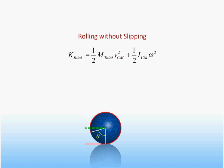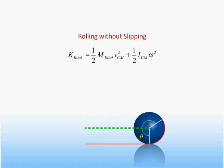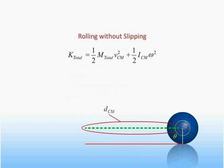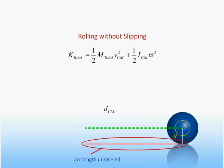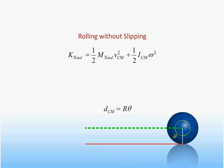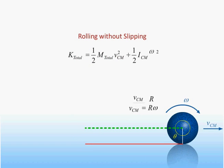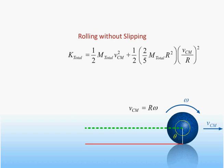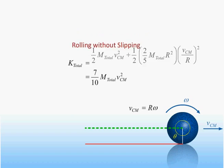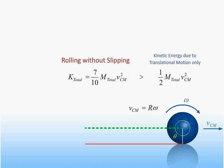Here we see the ball rolling through one revolution. As the ball rotates through an angular displacement theta, the center of mass moves through a distance equal to the arc length, which is equal to R times theta. Therefore, we see that the velocity of the center of mass is just equal to the product of the angular velocity of the ball and its radius. We can now rewrite the total kinetic energy entirely in terms of the ball's translational velocity. Note that the total kinetic energy is now bigger than what it would be if the ball were sliding with the same speed, since we need to account for the additional kinetic energy due to rotation.